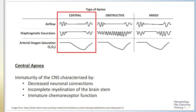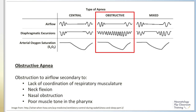In the neonatal population, central apnea is related to immaturity of the central nervous system. The preterm brain, brainstem, and spinal cord have fewer neuronal connections, poor myelination, and immature chemoreceptor function and response, which leads to uncoordinated breathing patterns. In the figure, the red box highlights characteristic sleep study findings: in central apnea, there is a cessation of both airflow and diaphragmatic excursions, which is followed by a drop in oxygen saturation.